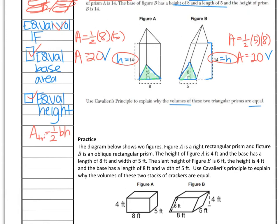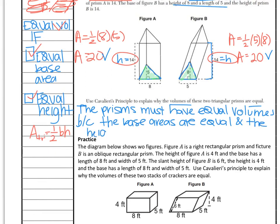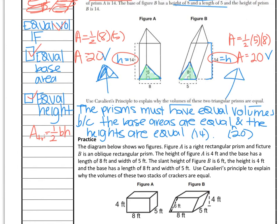Cavalieri's Principle allows us to say the volumes are equal because they have equal base area and equal height. The prisms must have equal volumes because the base areas are equal and the heights are equal. If you want, you can include that the height was 14 and the base area was 20 — but you have to show that work in order to justify your response.